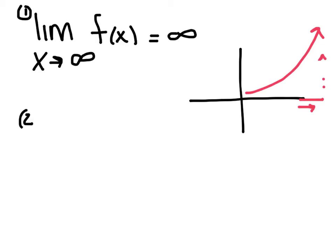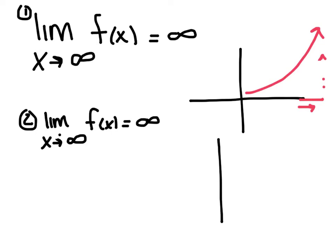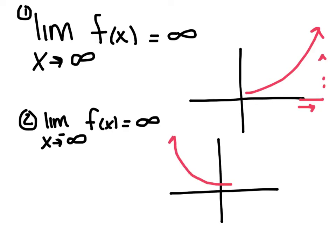The limit as x approaches negative infinity of f of x equals infinity. Same idea — this time, as your x values head towards negative infinity, your y values, your intended height, is going up. So as I approach this way, my y values are going up. So far it's easy, hopefully.